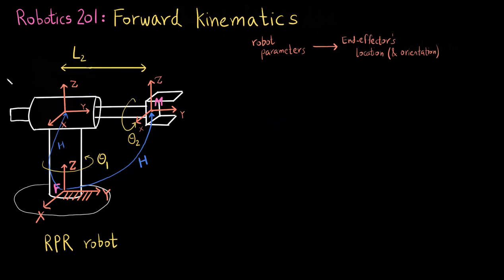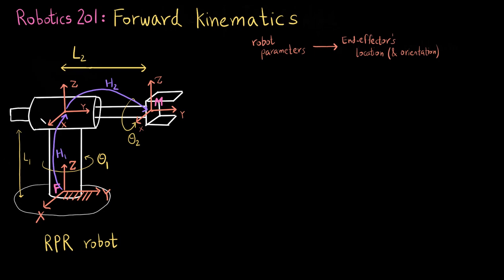Let me erase all of that. Now I have just drawn H1 and H2, my two homogeneous transformations, and I have also marked out this length l1. If you have a robot in front of you with fixed geometry, you would already know what l1 is. You find H1 and H2 and multiply them together to find the homogeneous transformation that takes the fixed frame and moves it to the end effector frame.